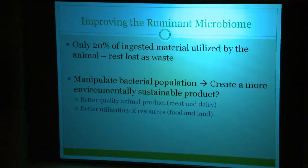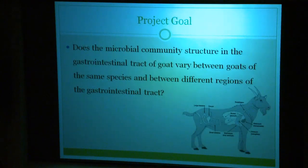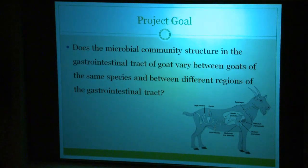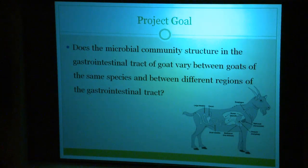While there is a plethora of information regarding cattle rumen, not much information is available about the bacterial symbionts of goats. Therefore, before we begin to improve this population, we must first understand the existing microbial community, and this is accomplished through construction of a bacterial clone library. With the resources and time at our disposal, we knew it would be difficult to complete a thorough analysis of the entire digestive system, so we decided to focus our research on two sections of the GI tract. The rumen is the first and largest stomach and the site of the greatest microbial activity in the animal. We also decided to look at the rectum, which is at the farthest end of the GI tract. Our big picture project question became: does the microbial community structure in the GI tract of goats vary between goats and between different sections of the GI tract?